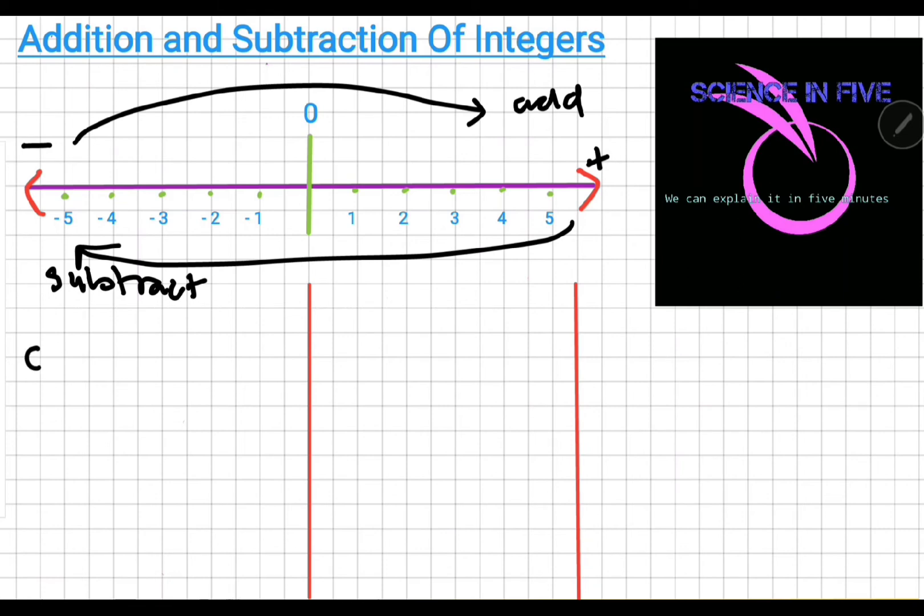So, zero plus five means move five steps from zero. One, two, three, four, and five, to give me an answer of five.